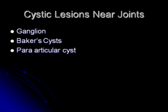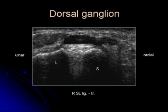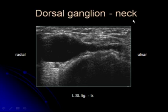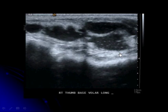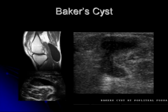Ultrasound is very good at looking at cystic lesions near joints. A few examples include looking at a ganglion cyst, a Baker's cyst, and a paraarticular cyst. Here is an example of a ganglion cyst at the scapholunate joint — a large cyst on the radial aspect with a neck leading towards the scapholunate ligament. This is a complex, multi-septated ganglion cyst. Here is an example of a Baker's cyst in the popliteal fossa.